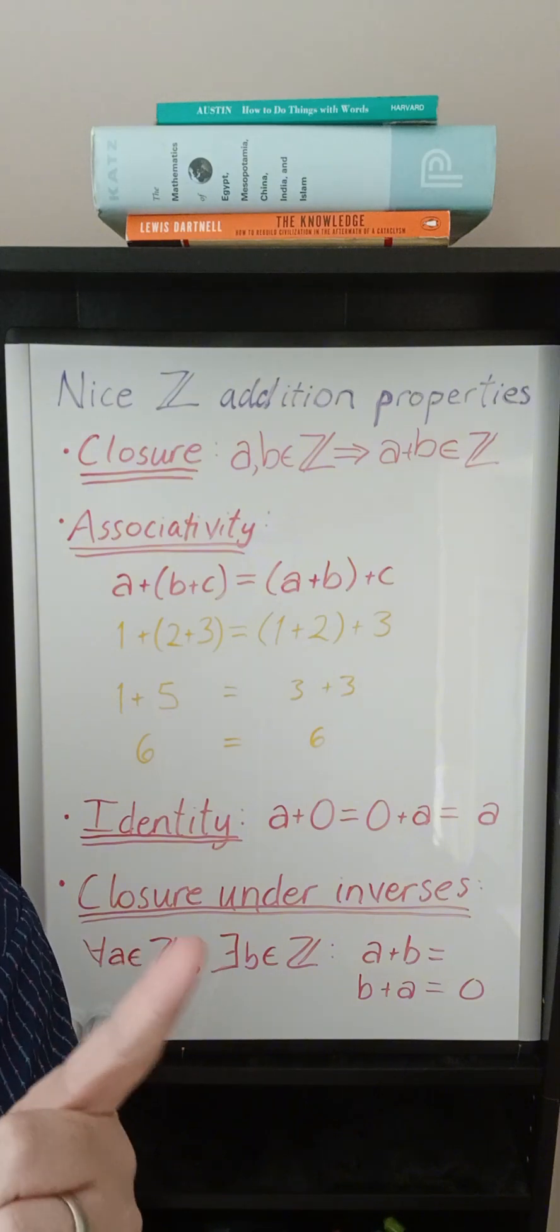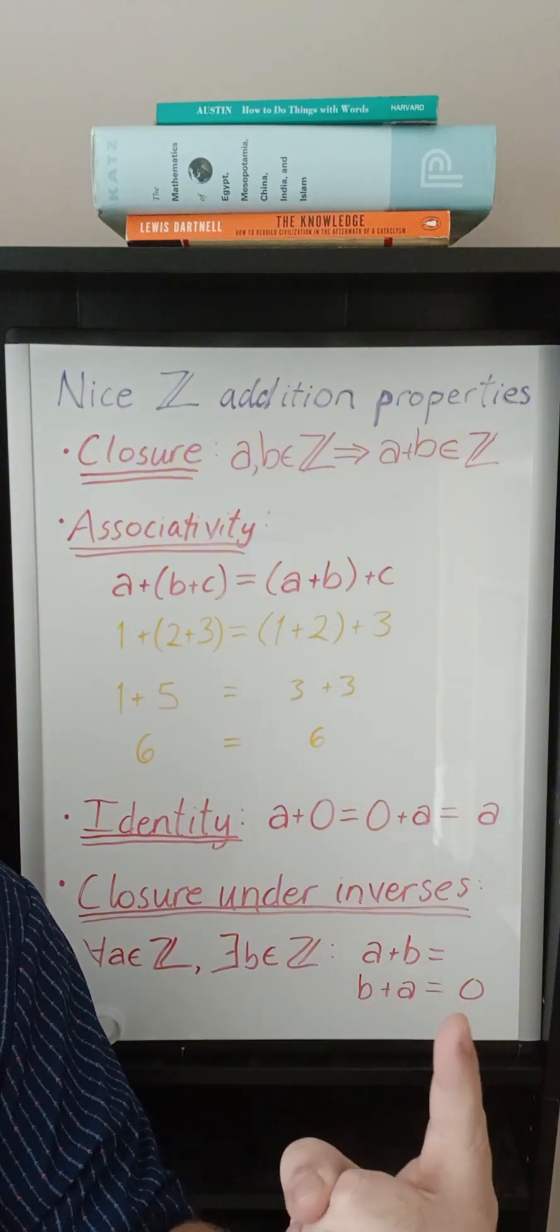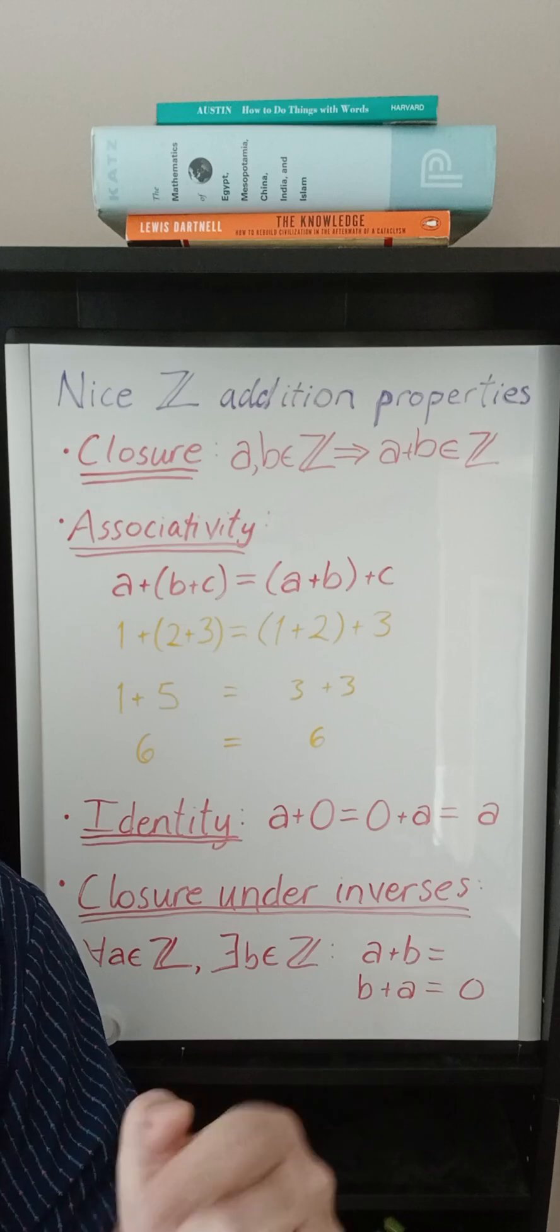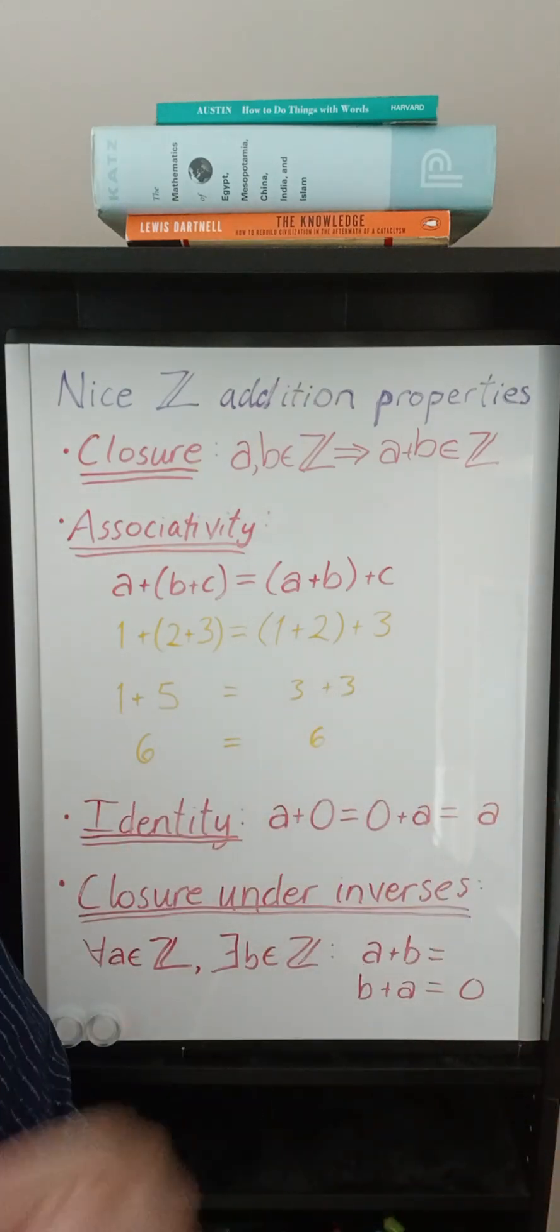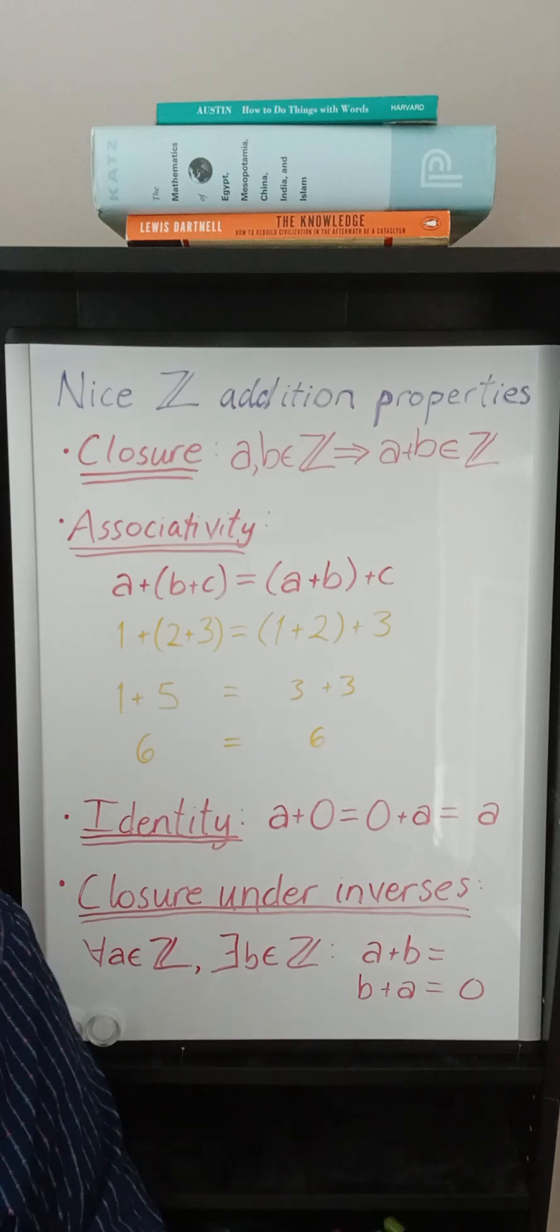A quick example by the way for this is like one and negative one, you add them together and you get zero so they're inverses of each other. Also the inverse of say negative seven is seven because again if you add them together you get zero.